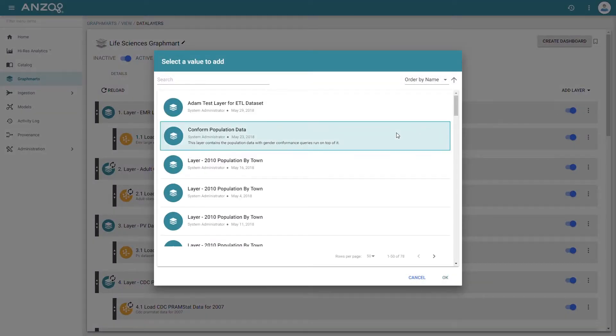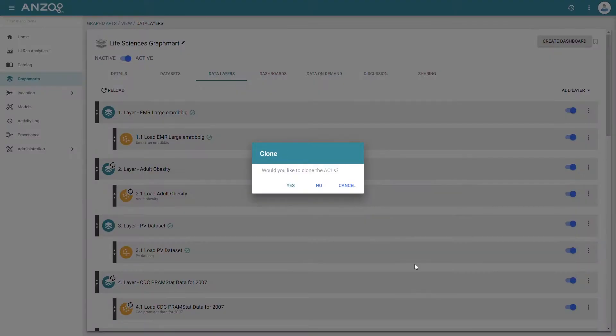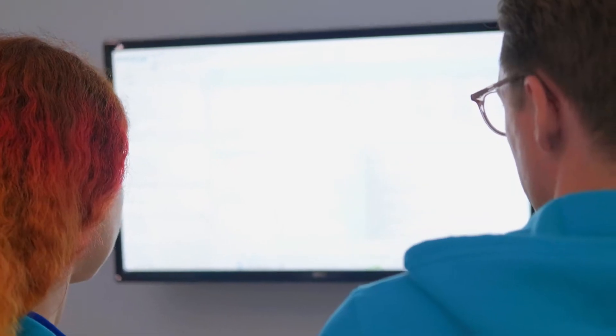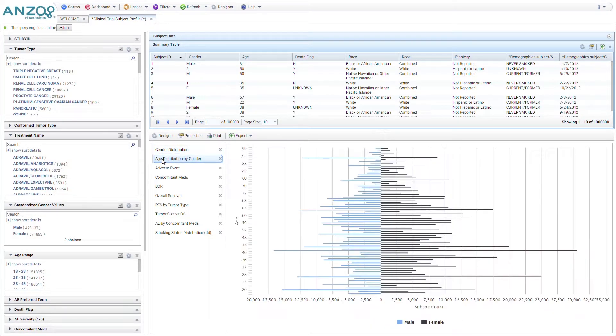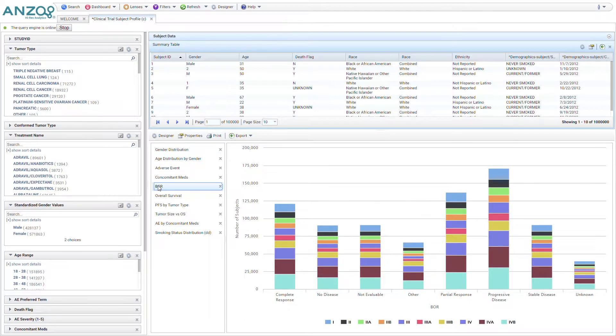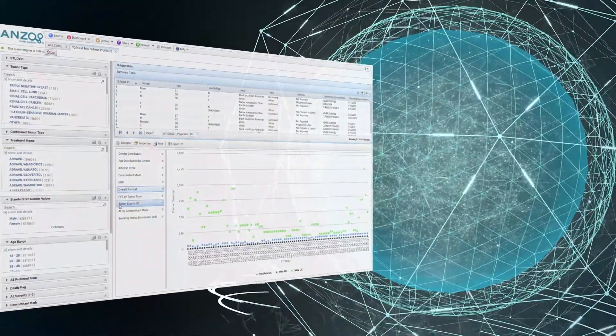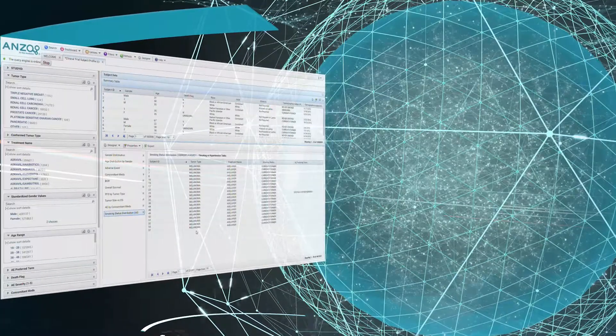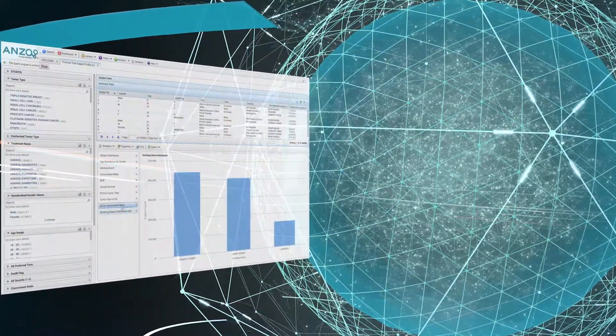No more one-off transformations and coding exercises to get data into your BI tool or machine learning algorithm. With high-res analytics, you'll become a citizen data scientist, exploring and analyzing data through a semantic layer using simple filters, charts, and tables, discovering what questions to ask along the way.